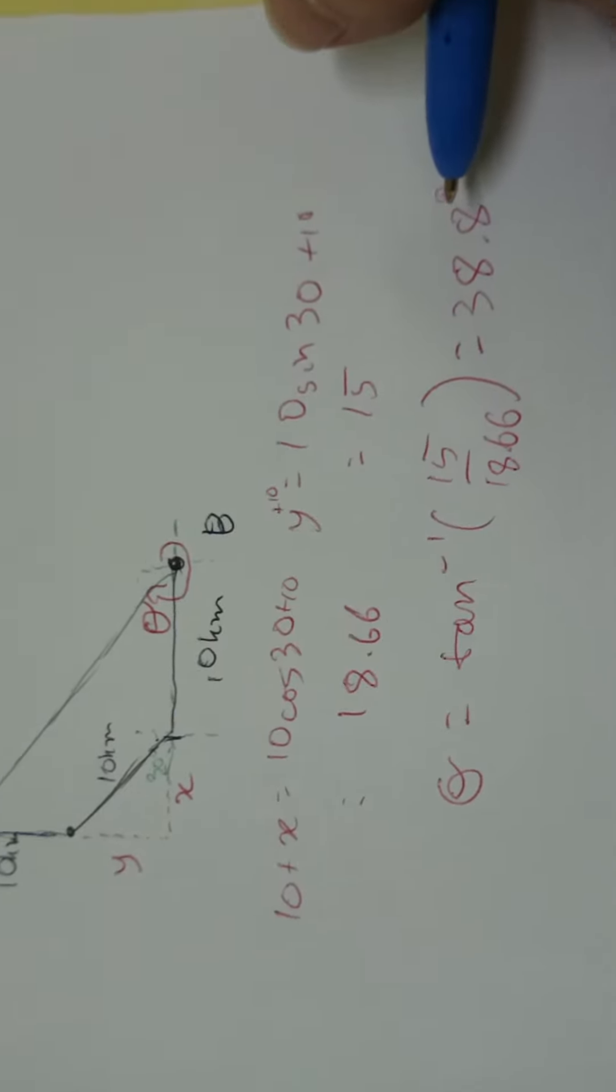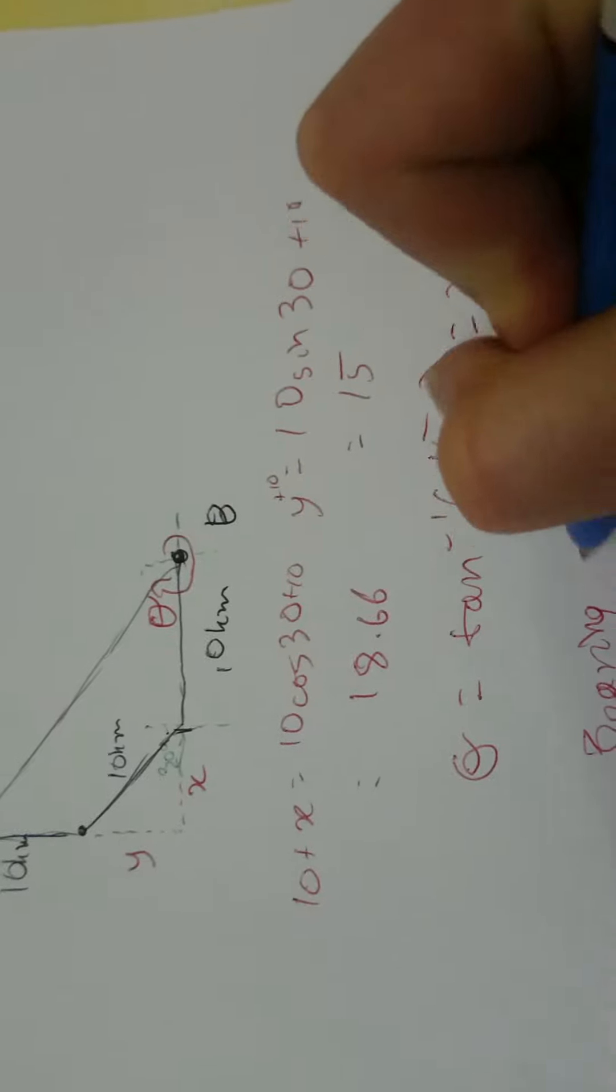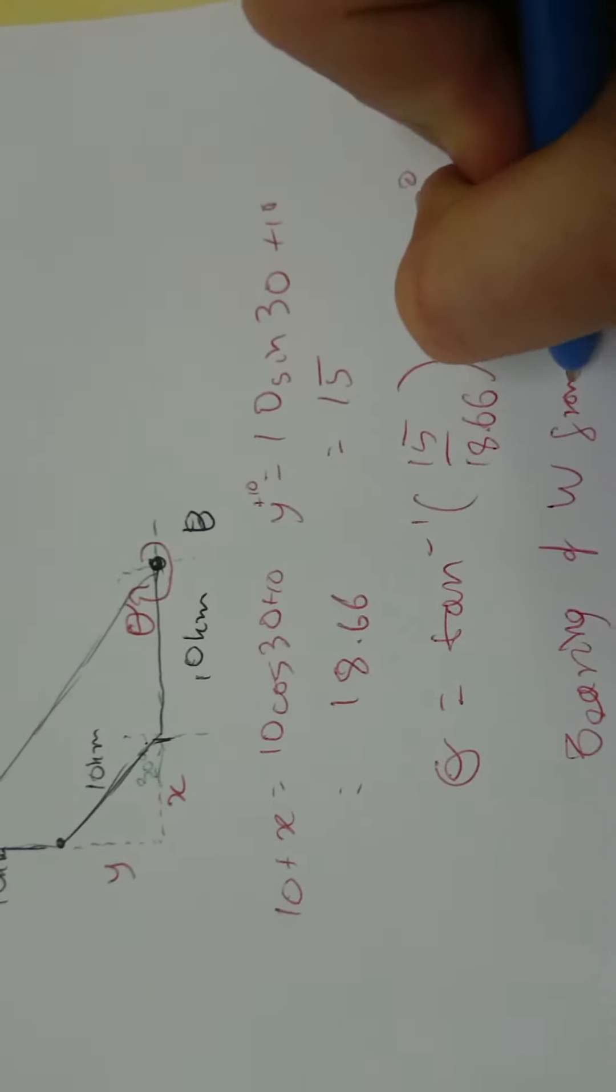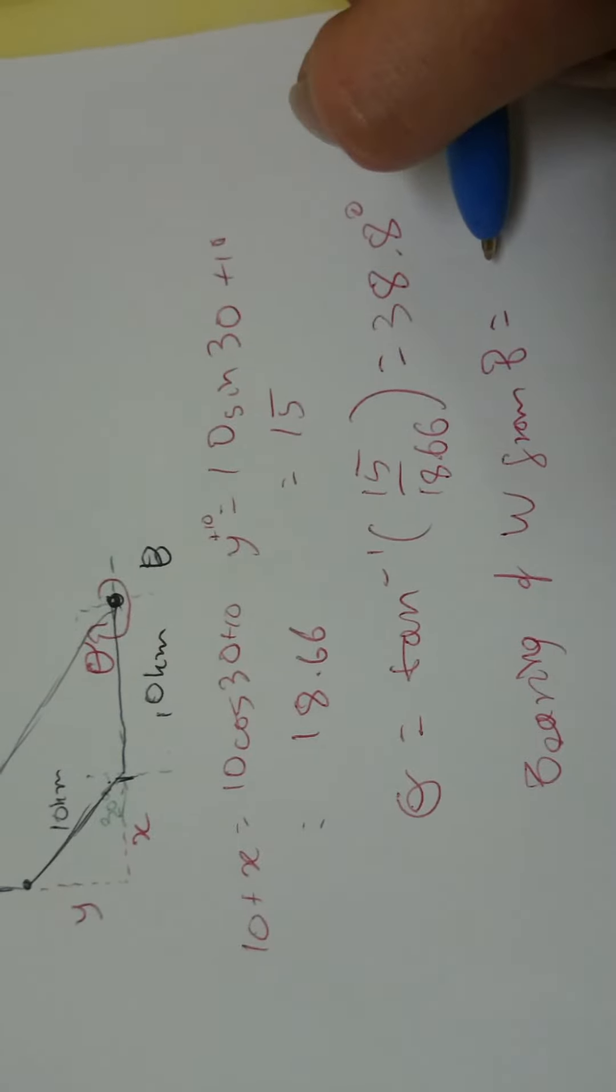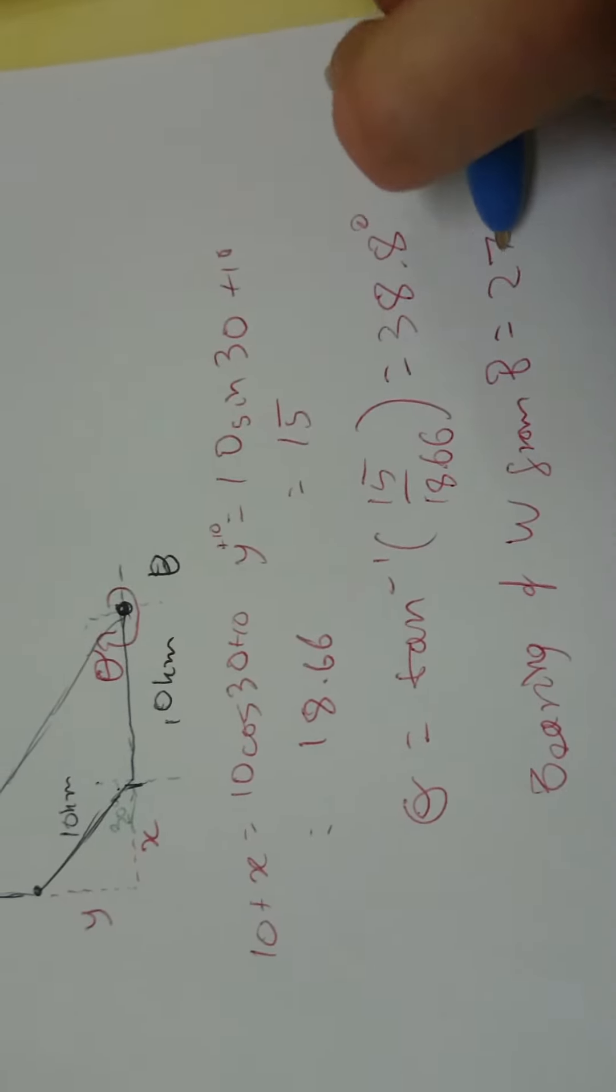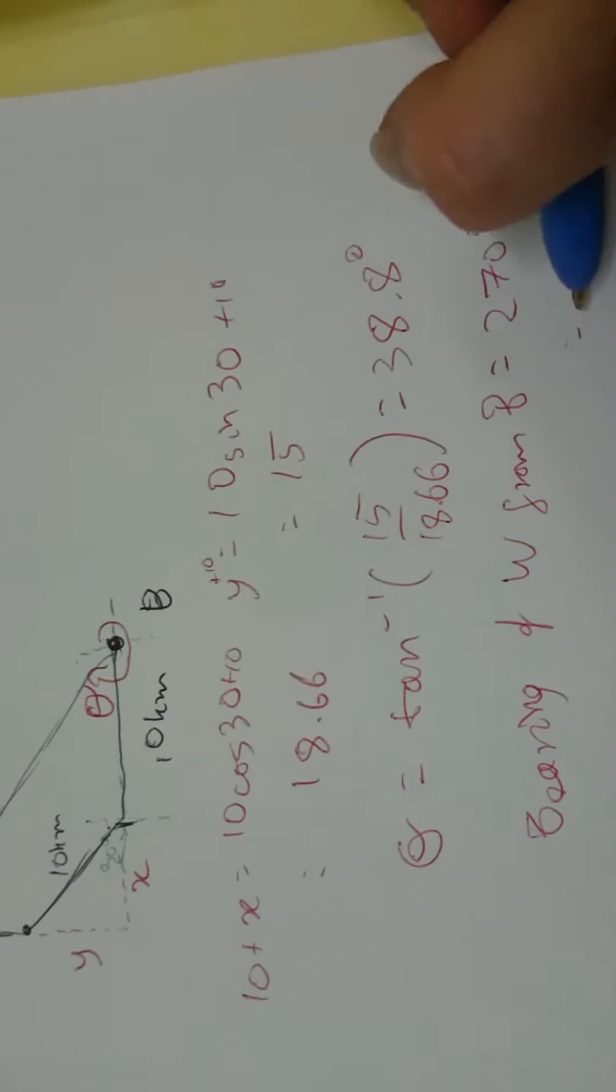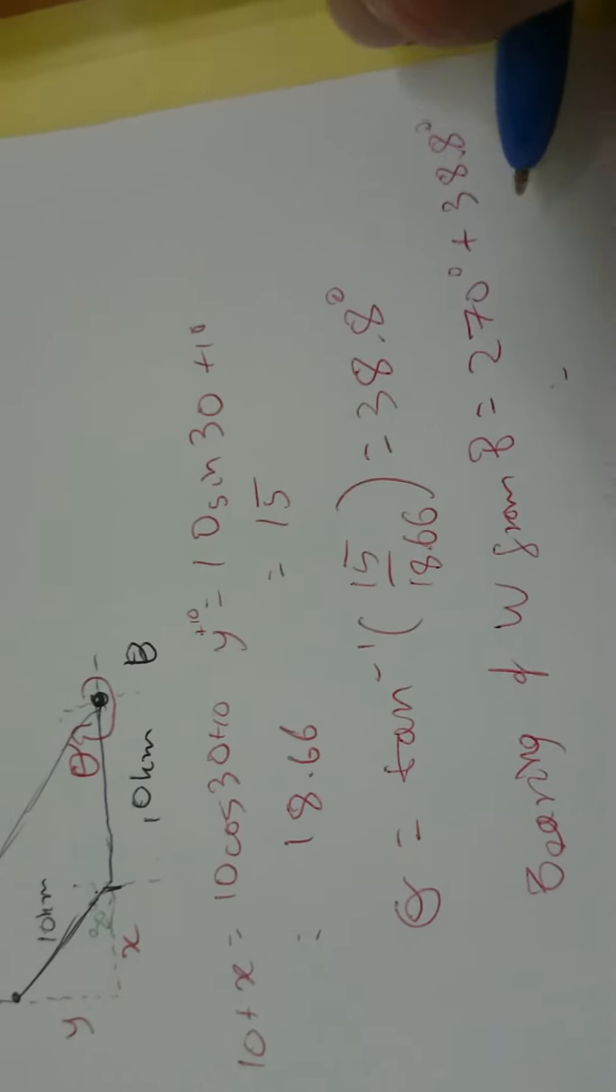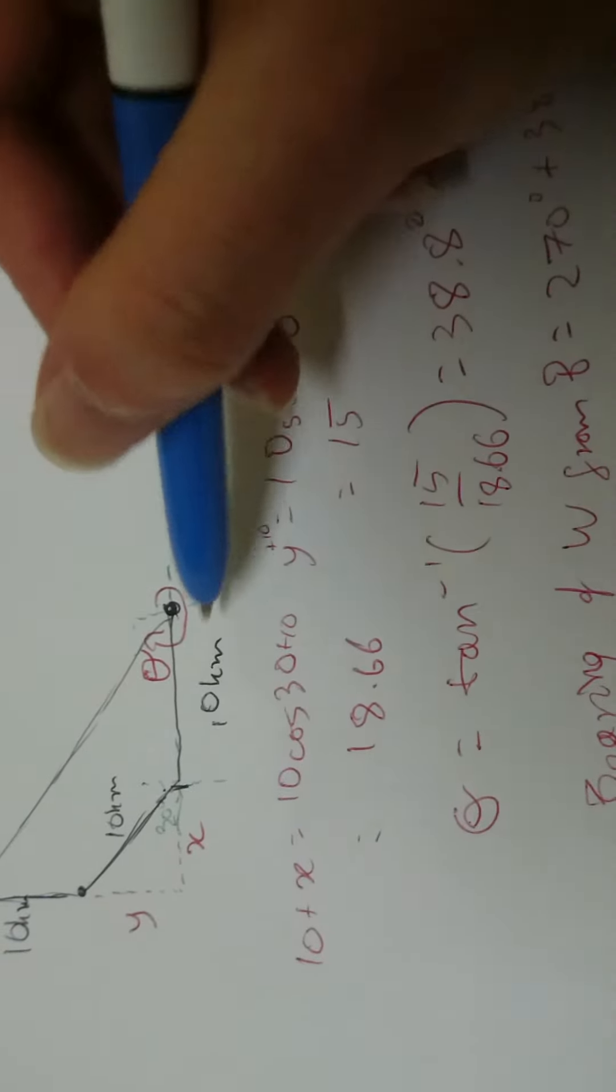Now, we know that's 38.8 degrees. So, now the bearing of white from black equals 270 degrees plus the 38.8, which equals our 300, I know, sorry. So, that is the bearing of white from black, but we want the bearing of black from white.